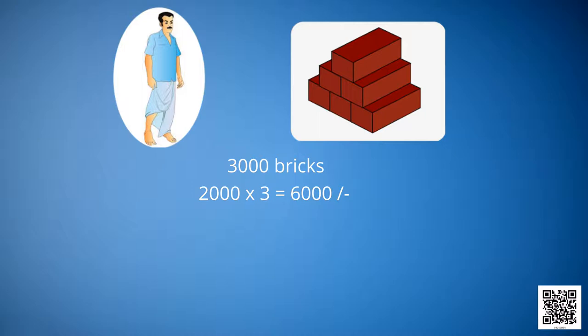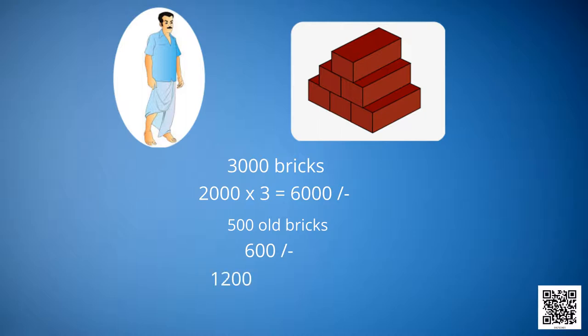Guess what he will pay if he buys 500 old bricks. He will have to pay 600 rupees. That means 1,200 multiplied by 500 divided by 1,000 comes out to be 600.